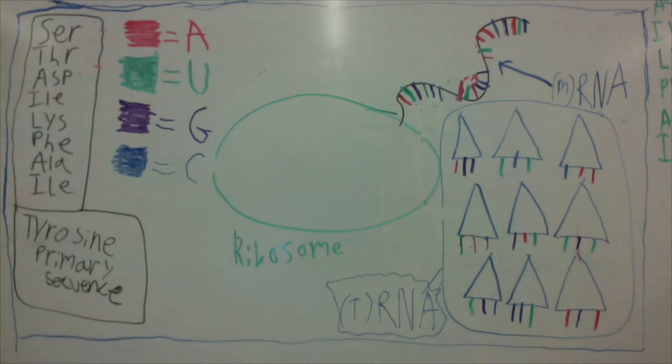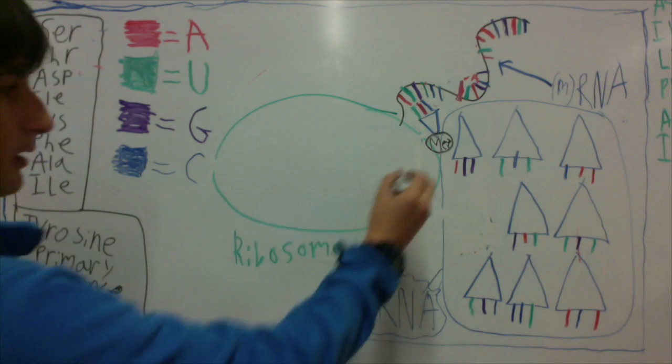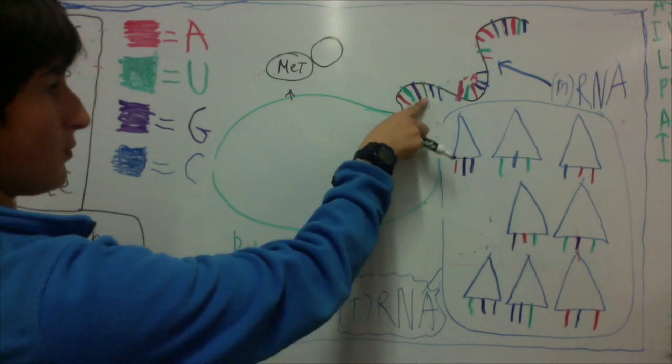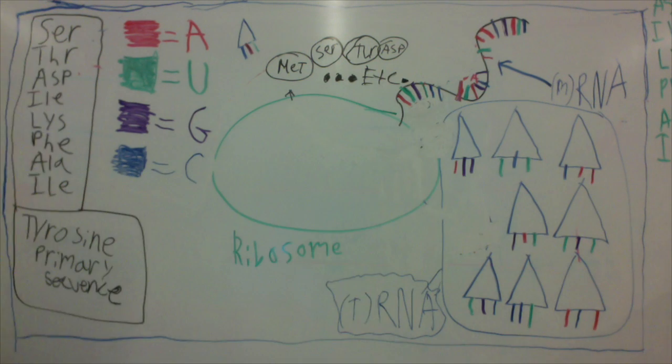To read it, the ribosome needs the tRNA, which has the opposite letters to the ones found on the mRNA. This allows them to bind on and deposit the amino acid that is stuck to the end of them.